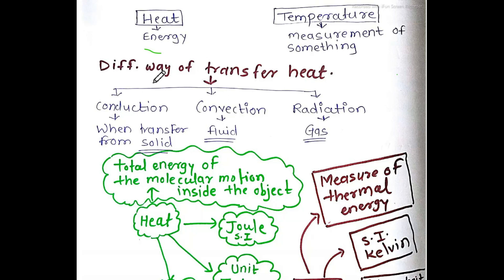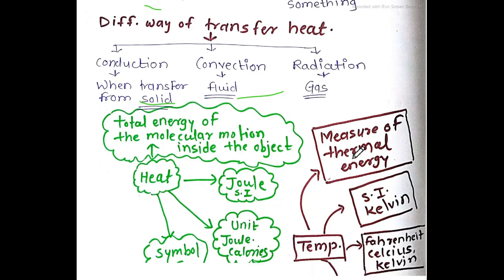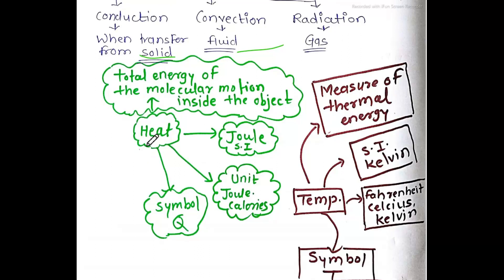The flow chart has arrows showing heat flow. Conduction is when heat is transferred from solid to solid. Convection is when heat is transferred through liquid. Radiation is when heat is transferred through gases. These are the three modes of heat transfer.